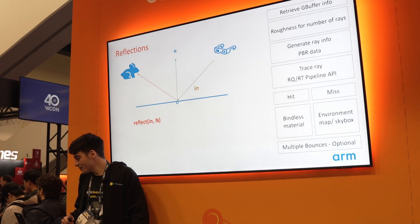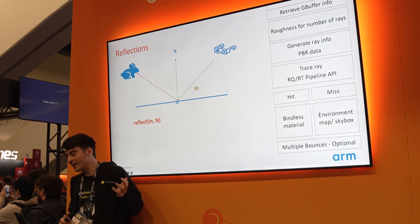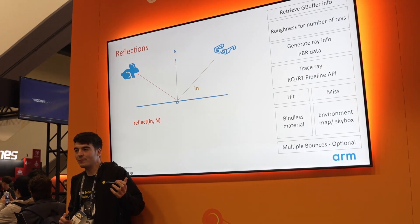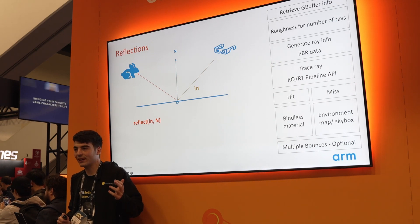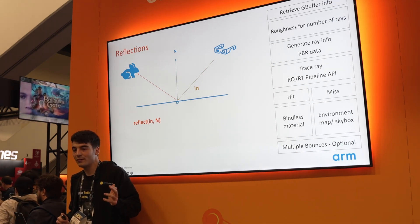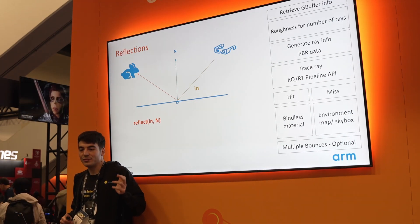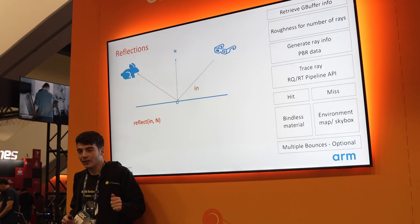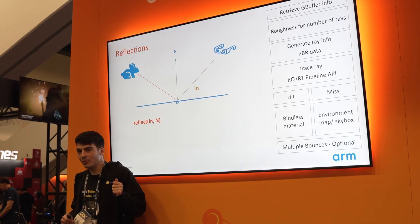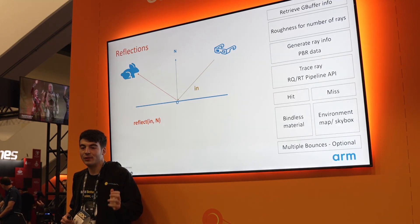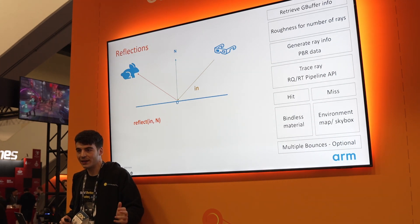Let's start with reflections. First, we sample from the G-buffer — the normal, the depth, and different material properties. We use the roughness to compute the number of reflection rays we will launch. For glossy reflections with high roughness we require multiple rays; however, for mirror reflections we only need one single ray. Then, once we generate the ray using physically-based rendering data, we can trace it using either the ray tracing pipeline or Ray Query. If we hit something, we use bindless materials to retrieve the material of the hit and illuminate it. If a ray misses, we just sample from the environment map and reflect the sky.